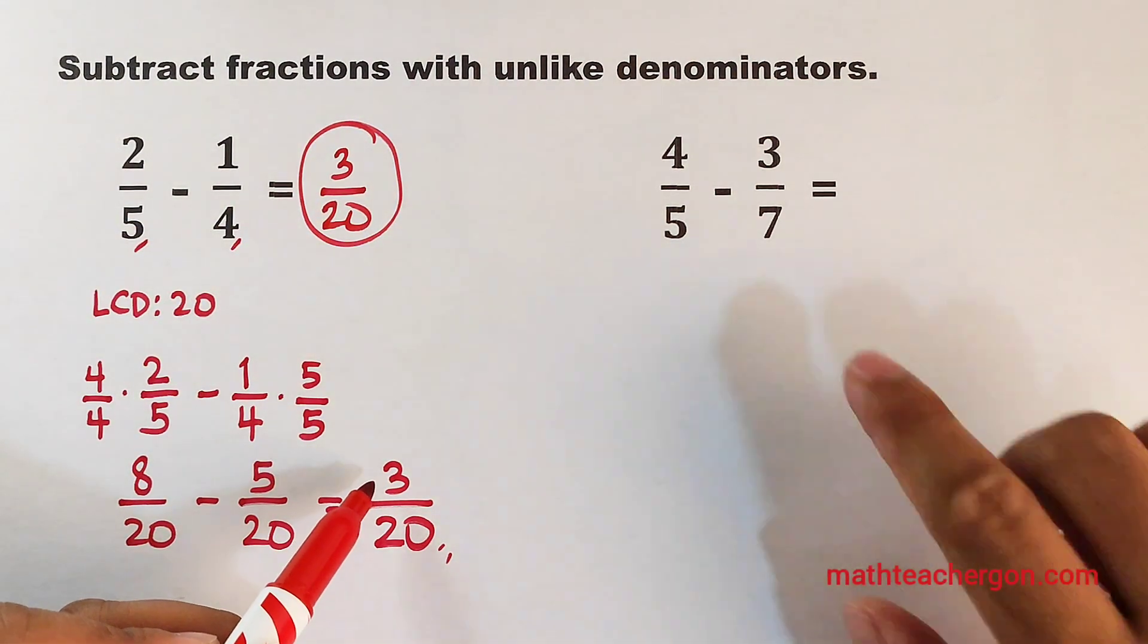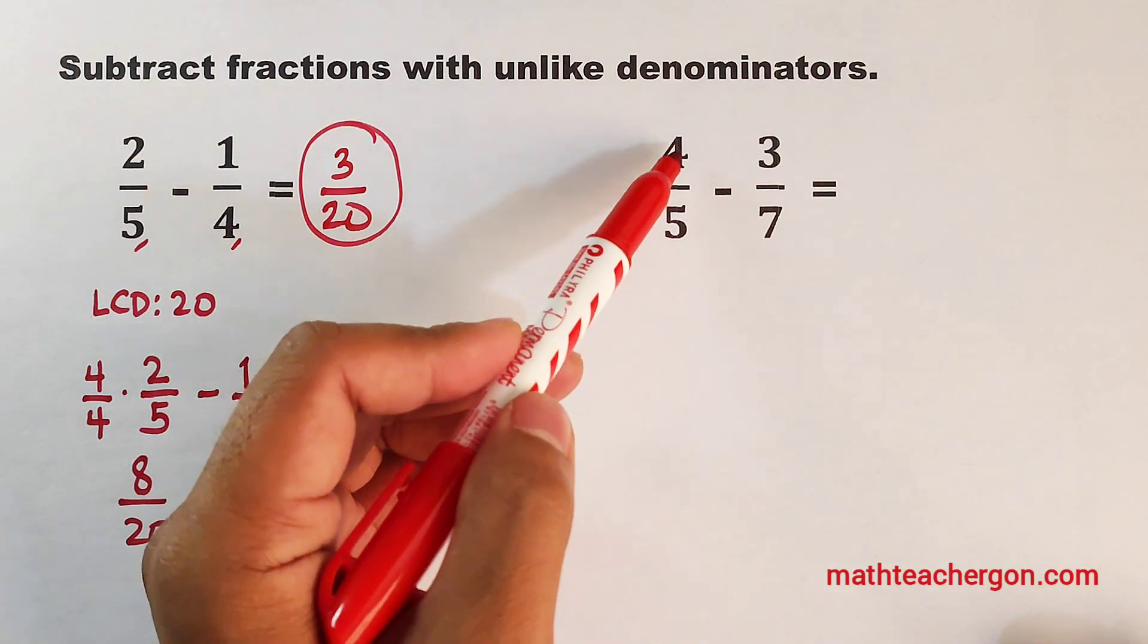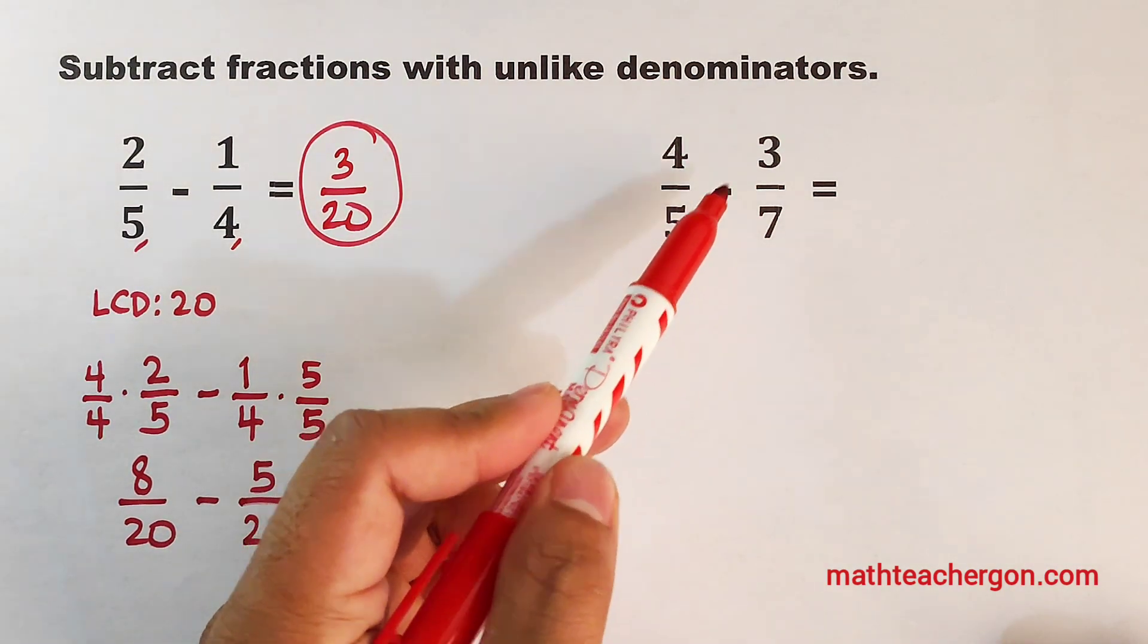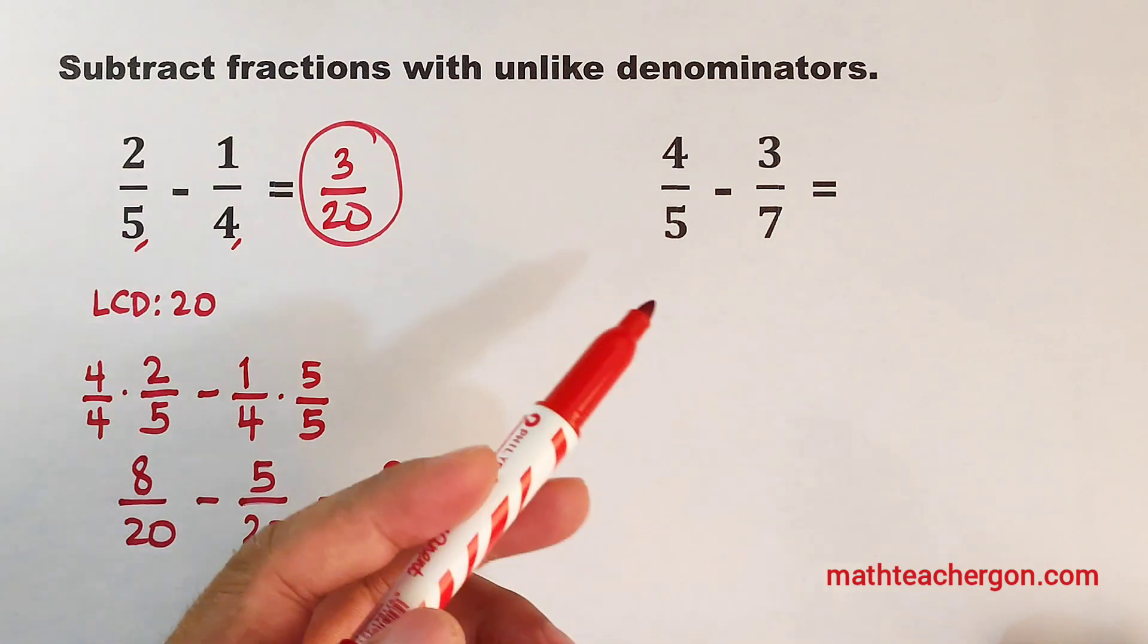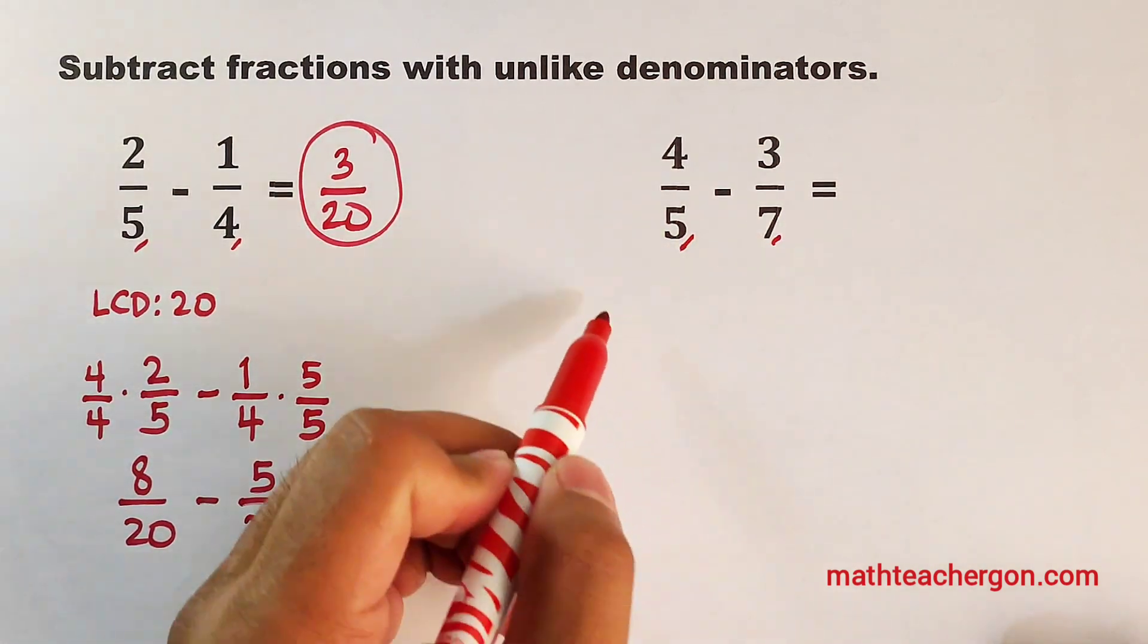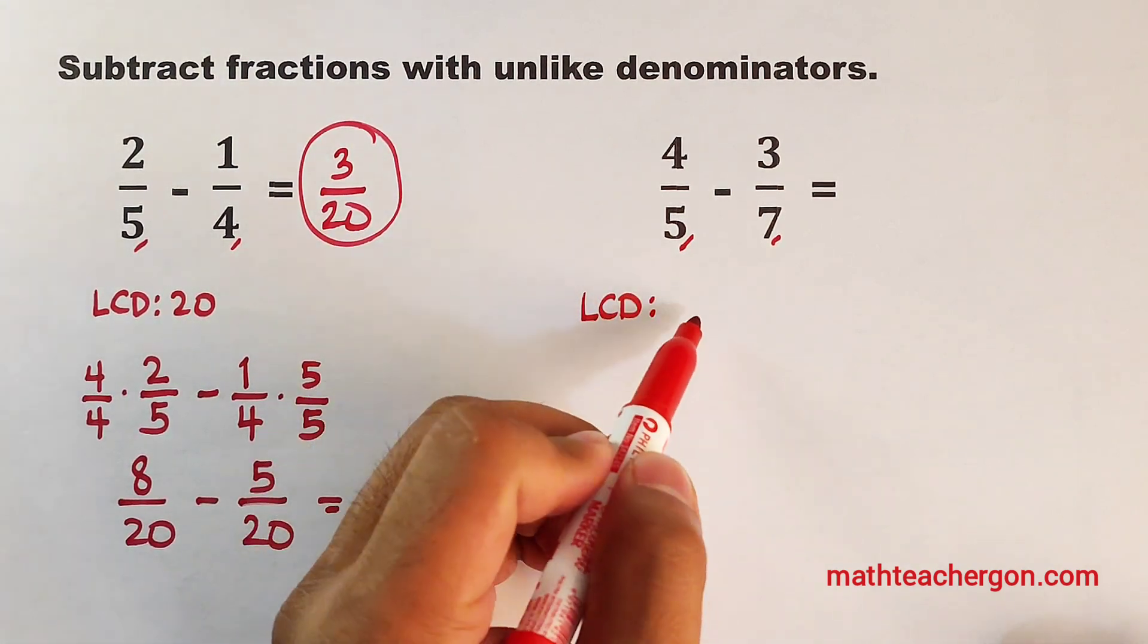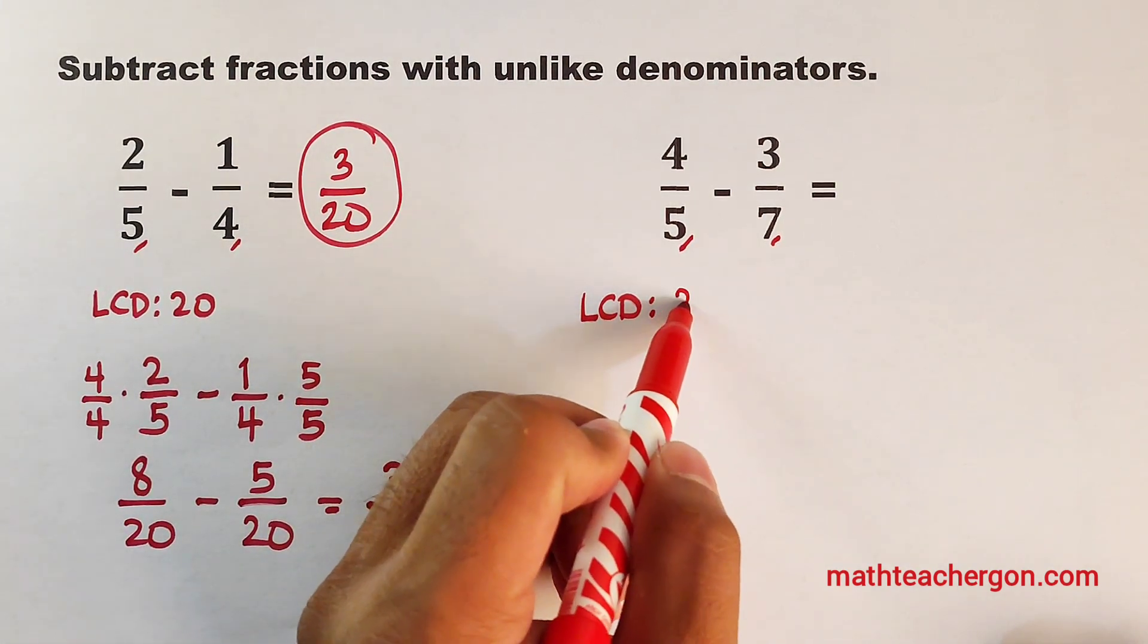Now, let's continue with example number 2. For example number 2, we have 4 over 5 minus 3 over 7. What is the LCD between the denominators 5 and 7? Okay, you're correct. The LCD is 35.